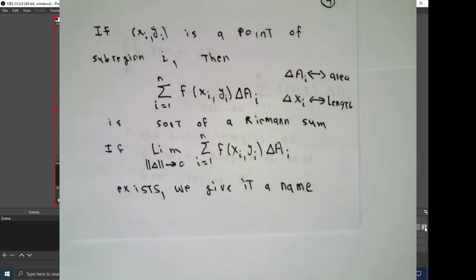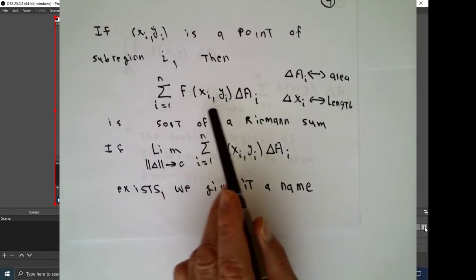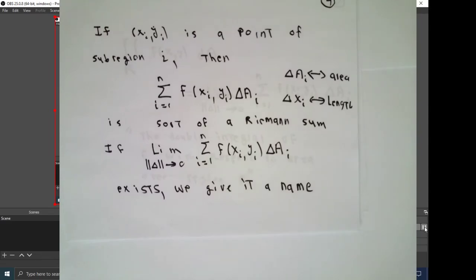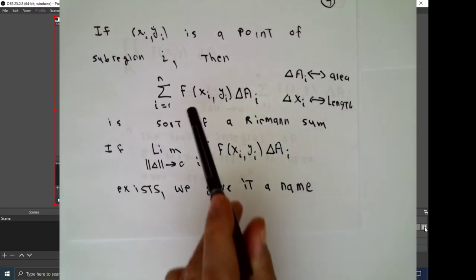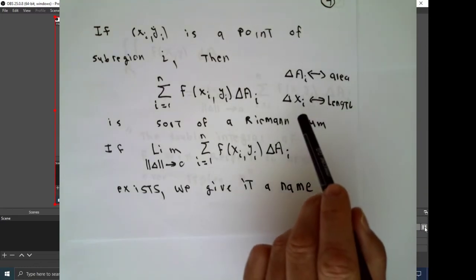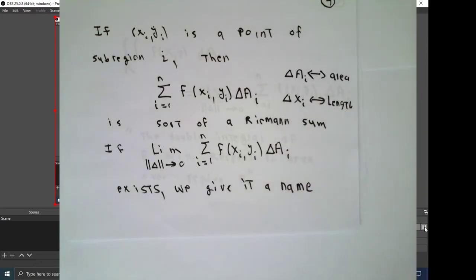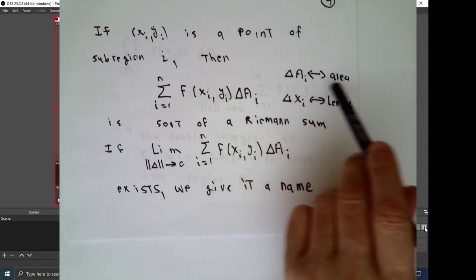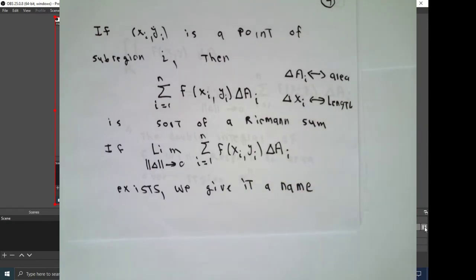Other than that, we proceed in an exactly similar way to what we did in Calculus 1. Select a point, x_i, y_i, within sub-region number i. Evaluate the function f at that representative point. Multiply it by a quantity that represents how big the sub-chunk is. It used to be delta x, which was a length. Now it'll be delta A number i, which is the area.